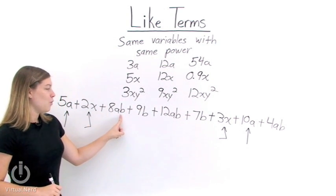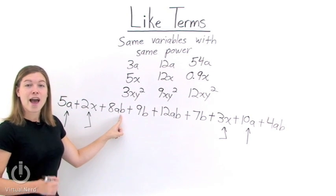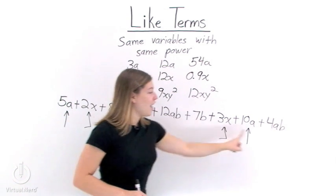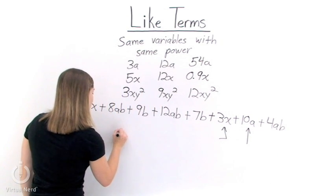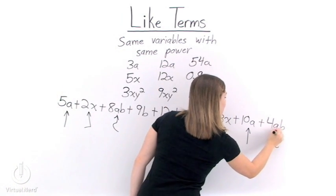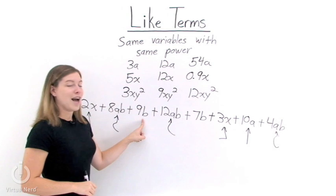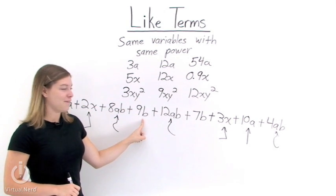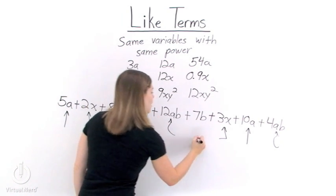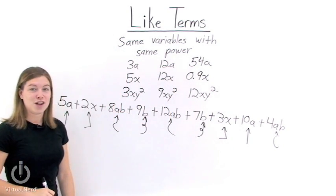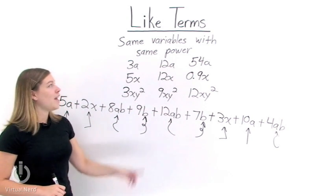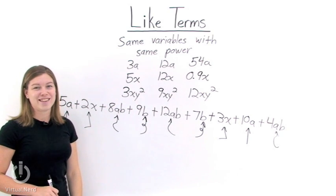Now for 8ab, we need a and b both raised to the first power. We find 12ab and 4ab, so all three of those are like terms. For 9b, we need b raised to the first power, and there's a 7b, so both of those are like terms. That means we've found all of the like terms in this expression. Remember, if you're trying to find like terms, you have to have the same variables raised to the same power.